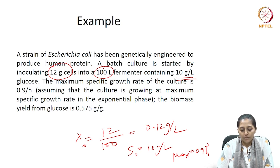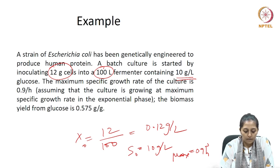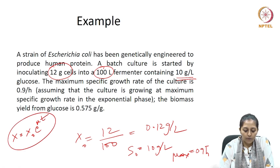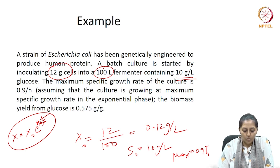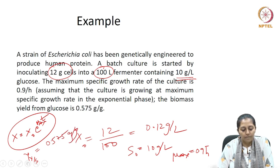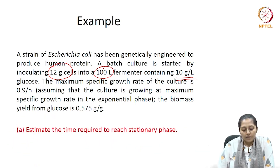It is also stated to assume that the culture is growing at its maximum specific growth rate in the exponential phase, which means x equals x0 times e to the power of µmax times t in the exponential phase. The biomass yield from glucose, Yx/s, is given as 0.575 grams per gram of glucose consumed. They are asking us to calculate the time required to reach the stationary phase.